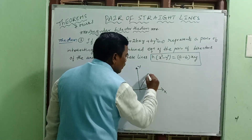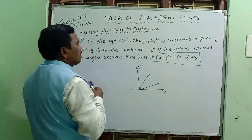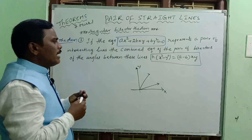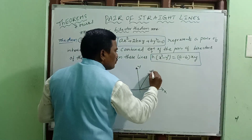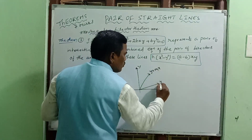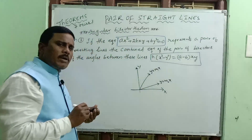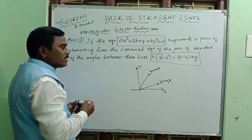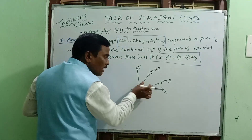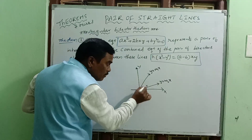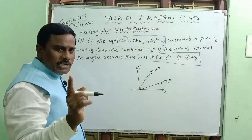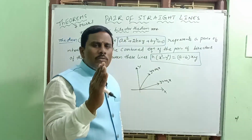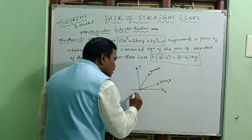This equation represents two lines passing through the origin. The two lines are y equal to m1x and y equal to m2x. We will bisect the angle between them. If the angle is 90 degrees, the bisector gives 45-45 degrees; if 30 degrees, it gives 15-15 degrees.